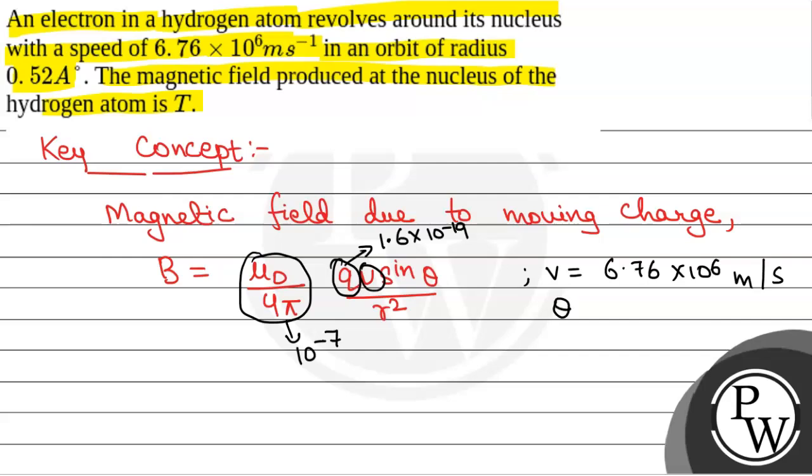Theta is the angle between velocity and the radius vector.